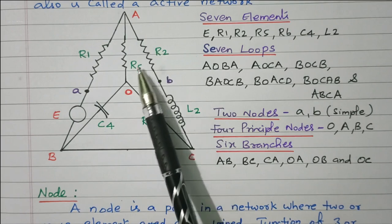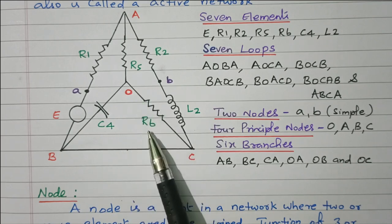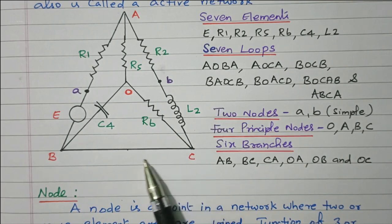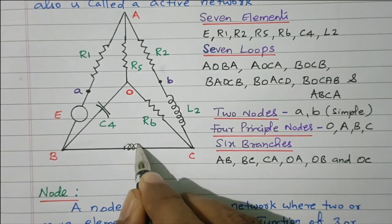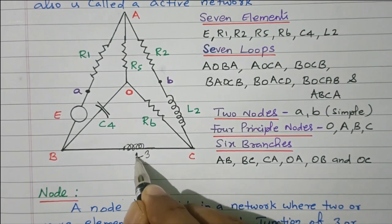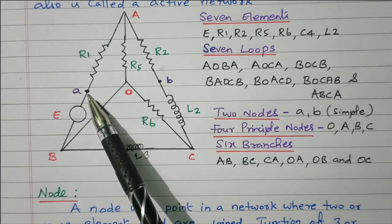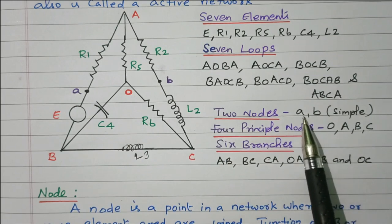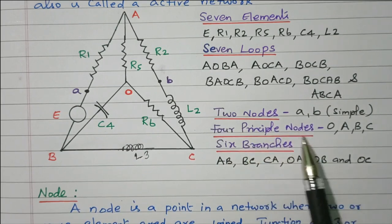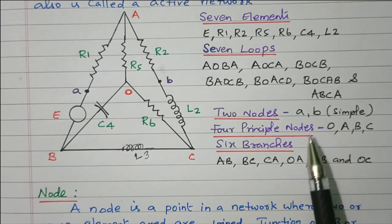At node A, R1, R2, and R5 are connected — three elements. At node O, R5, C4, and R6 are connected. At node C, R6 and L2 are connected. At node B, C4 and the EMF source are connected, along with an inductor L3. So the junction where two elements are connected is a simple node; junction where more than two elements are connected is a principal node. There are two simple nodes (A and B) and four principal nodes (O, A, B, and C).